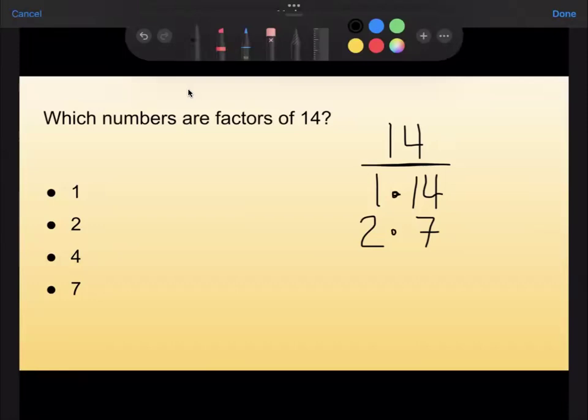So let's go over to the list and look and see which of these factors match up. Well, we have a 1, we have a 2, we do not have a 4, and we have a 7. So from this list, the factors of 14 would be 1, 2, and 7.